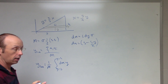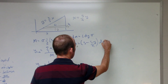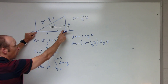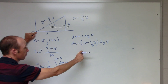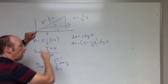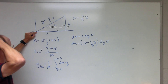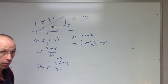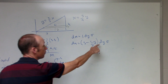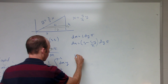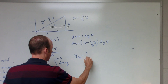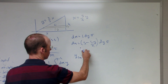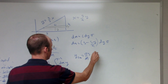Let's check: when y = 0 (bottom), the strip length should be s — and indeed s − 0 = s. At the top where y = h, the length should be 0 — and s − s = 0. That works. Now I have dm in terms of dy, so I substitute back. The y-center of mass is one over the total mass times σs times the integral from 0 to h of (1 − y/h) × y dy.